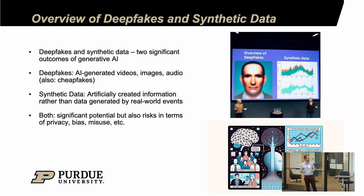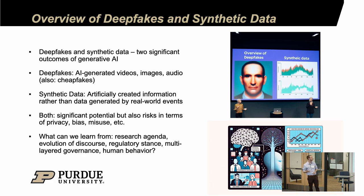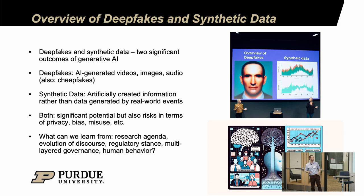We know that both of these areas come with benefits, but also shared risks: privacy, bias, and misuse that we're trying to grapple with. So what can we learn from the last six or seven years of conversation — the different components of the research agenda that have emerged, how the discourse has developed in social and policy settings, the regulatory stance, how governance has developed, and how humans interact with these technical systems?